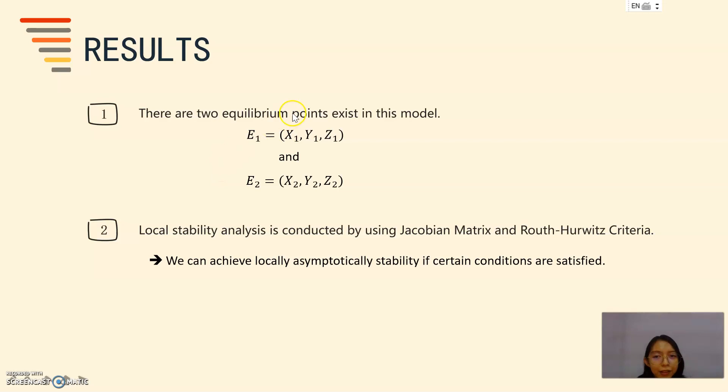There are three equilibrium points exist in this model. Equilibrium 1 and equilibrium 2. Equilibrium 1 consists of X1, Y1, and Z1. And equilibrium 2 consists of X2, Y2, and Z2. Local stability analysis is conducted by using Jacobian matrix and Routh-Hurwitz criteria. We can achieve locally asymptotically stability if certain conditions are satisfied.